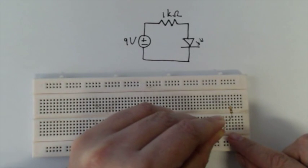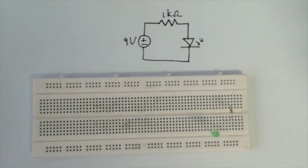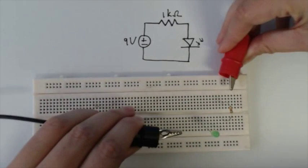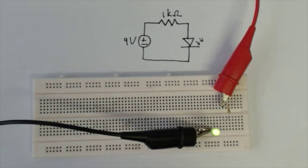Same story. Making sure that it's in the same row and that we are connecting our long leg to the resistor, and then connecting power again. And there our LED goes on.